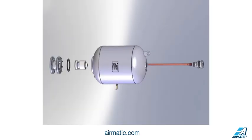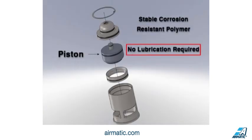Let's look at some of the key components of the air blaster. The pistons, for standard applications, are made of a stable corrosion-resistant polymer, which requires no lubrication. Without having to buy, fill, and maintain in-line lubricators, you save time and money, and avoid introducing residual lubricants into the environment.